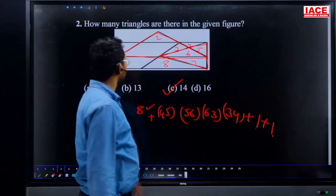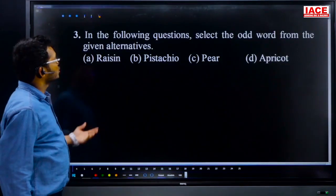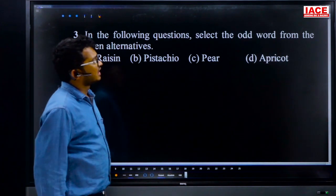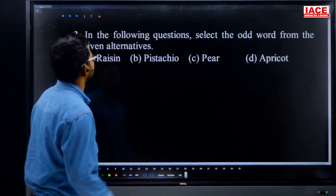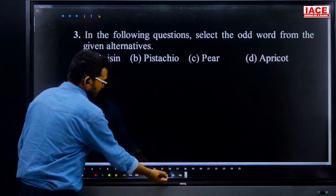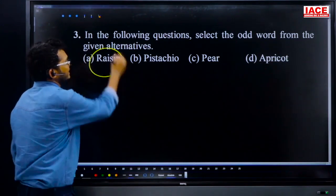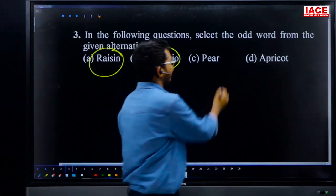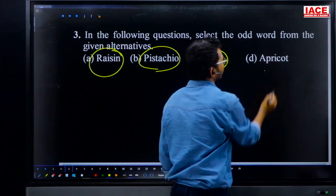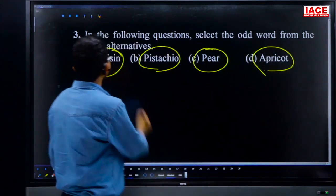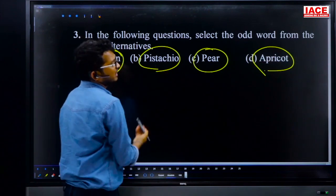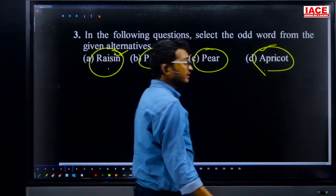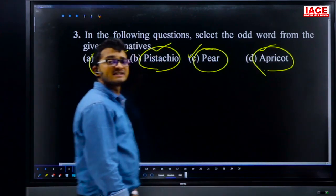Question 3: select the odd word from the given alternatives. The words are raisin, pistachio, apricot, and pear. Raisin, pistachio, and apricot are all dry fruits. But pear is a normal (fresh) fruit. So the odd one out is pear.